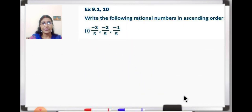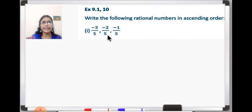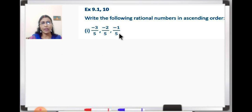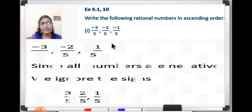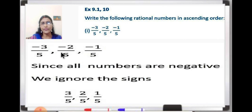Let us complete that. So now exercise 9.1, question number 10: write the following rational numbers in ascending order. The numbers given are minus 3 upon 5, minus 2 upon 5 and minus 1 upon 5. Here you can see all the numbers have the same denominator and there is a minus sign in all. As we have learnt, we will write down the numbers as given.